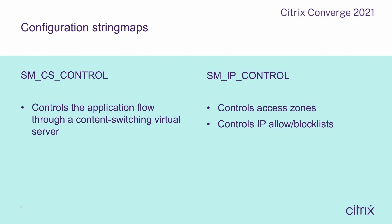We wanted to have all the moving parts of the data in a specific set of tables. These tables on a Citrix ADC are string maps, and we have two of them. We have SMCS control, which controls the application flow through a content switching virtual server — basically getting the request, handling it in the content switching virtual server logic, and determining which load balancing virtual server to use. The second is SMIP control, which controls the access zones for a set of content switches and also controls the allow and block lists for content switching and load balancing virtual servers.